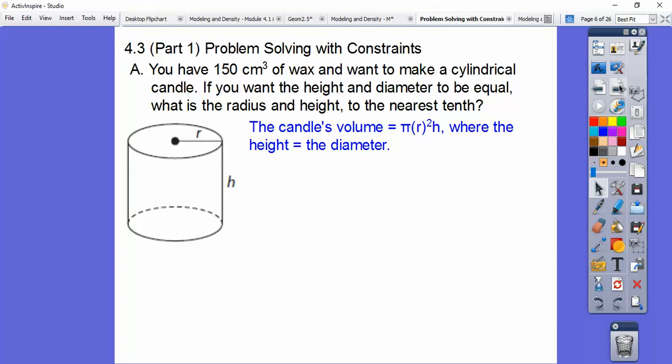So the candle's volume is base times height and the base is a circle. So pi r squared times h. And remember, h equals the diameter. So they have to be equal to each other. So since the diameter is twice the radius, then h equals 2r. So the volume, instead of putting h in there, we put in 2r right there. So I'll slide this 2 over here and then put the r with the r squared. It makes it r cubed right there.